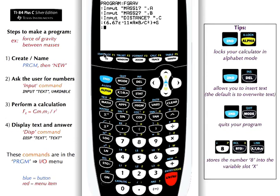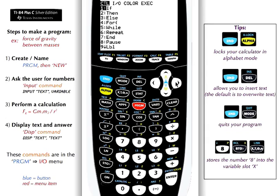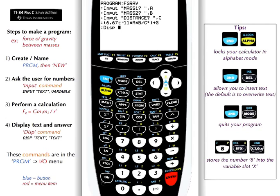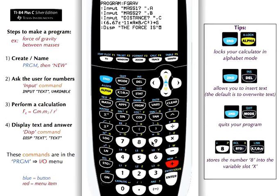Now I want to display the answer to the user. So program, input/output, display. Display works — you can display multiple items using quotes. I'll say quote, 'this is the force, is', unquote, then display the answer which is G, comma, alpha G. And I'll include units — quote, 'Newtons', unquote. This now displays: 'the force is', the variable G which is the answer, then 'Newtons'.